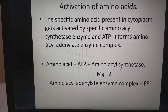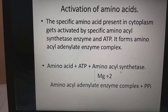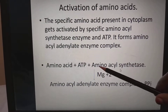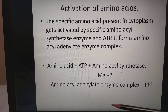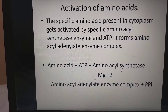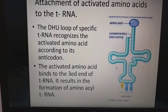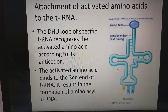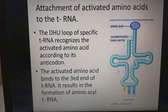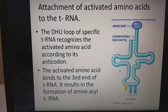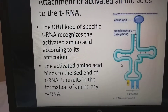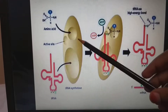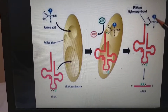Step 1 — Activation of amino acid: the specific amino acid present in cytoplasm gets activated by specific aminoacyl synthase enzyme and ATP, forming an aminoacyl adenylated enzyme complex. The reaction is: amino acid + ATP + aminoacyl synthase enzyme, in the presence of magnesium ions, gives aminoacyl adenylated enzyme complex + phosphate. Step 2 — Attachment of activated amino acids to tRNA: the DHU loop of specific tRNA recognizes the activated amino acid according to its anticodon. The activated amino acid binds to the 3' end of the tRNA, forming aminoacyl tRNA.